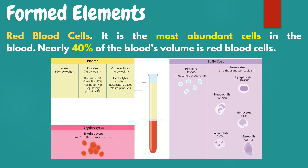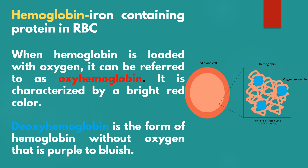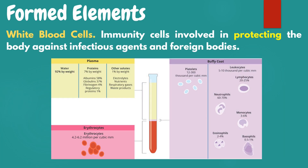Among the formed elements, red blood cells are the most abundant cells in the blood — nearly 40 percent of the blood's volume. Hemoglobin is an iron-containing protein in red blood cells responsible for attracting oxygen available in our lungs. When hemoglobin is loaded with oxygen it is called oxyhemoglobin, characterized by a bright red color. Deoxyhemoglobin is the form without oxygen and is purple to bluish in color.